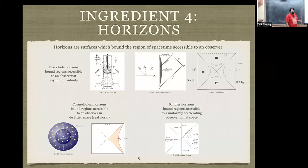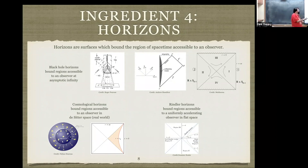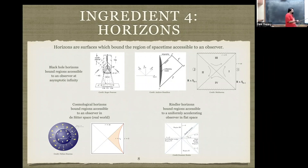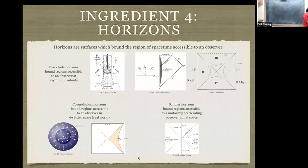There are also cosmological horizons — bounding the region accessible to an observer in de Sitter space, which is like the real world. The Milky Way can see out to the Hubble radius but not beyond. The Penrose diagram for this looks remarkably similar to the black hole case but with R equals infinity and R equals zero exchanged. The third type is a Rindler horizon, which bounds the region accessible to an accelerating observer in flat space — a signal from one side will never reach the accelerating observer.